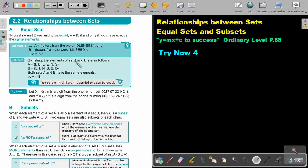By listing the elements of sets A and B as follows. Let's start with A. Remember we don't repeat a letter. So there's an I, a D, a L, an E, an N, and an S.